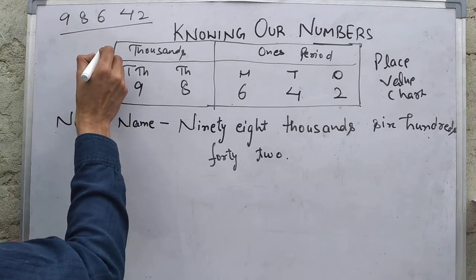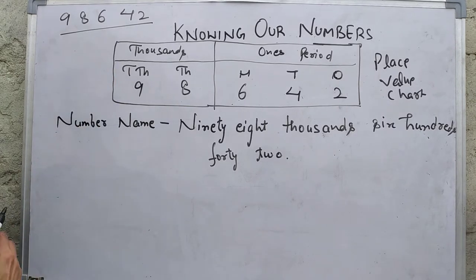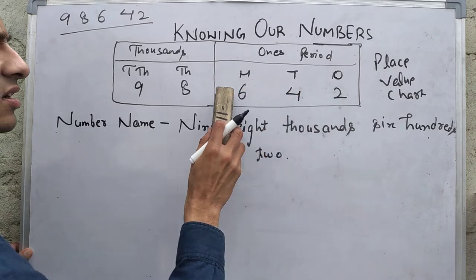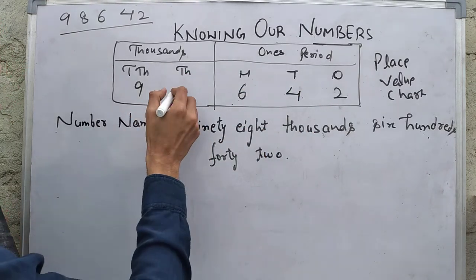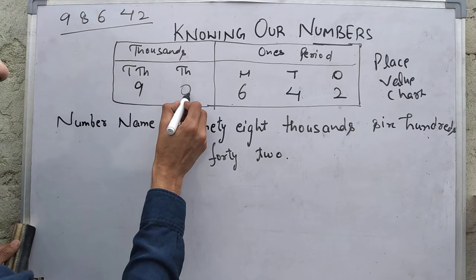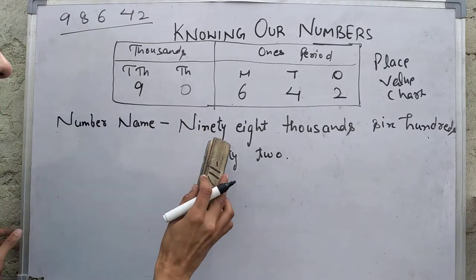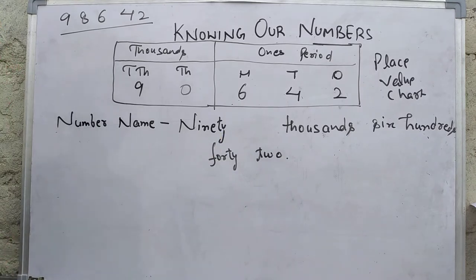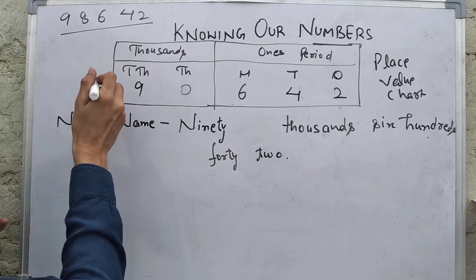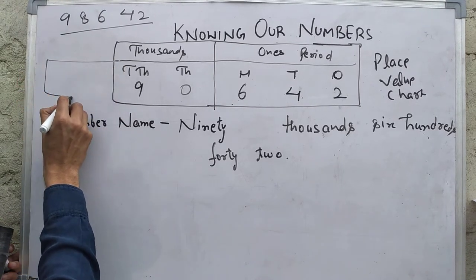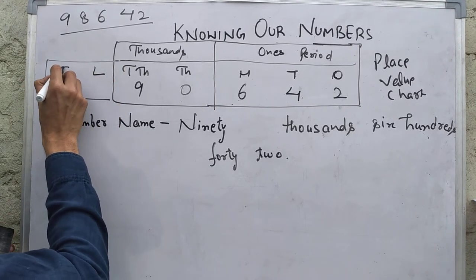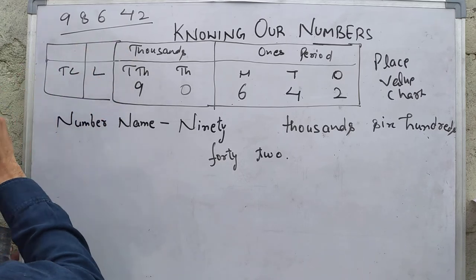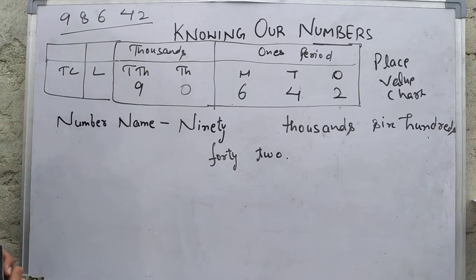In case there was a zero in that position, then how would you read it? Reading the period together, you would say 90,000 and then 642. After the thousands period, you know you have the lakhs period, 10 lakhs period, and crores and 10 crores period. In this way we can write the number name.